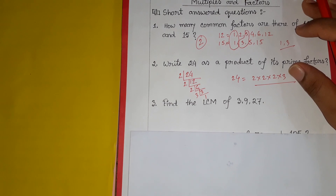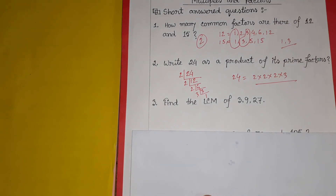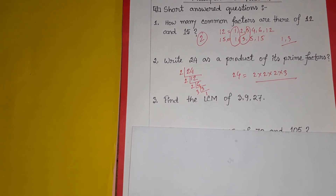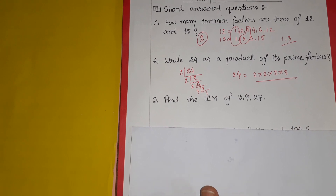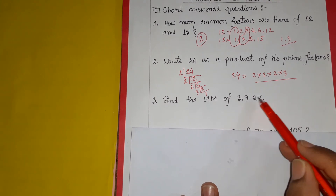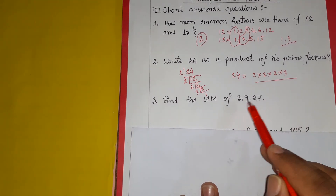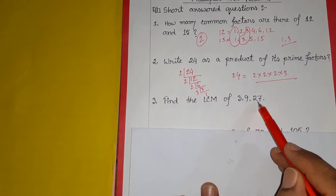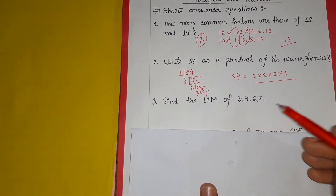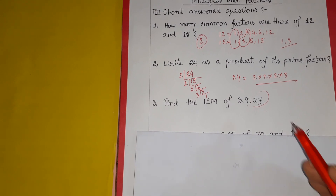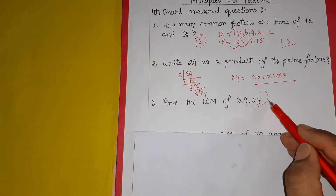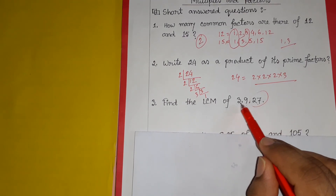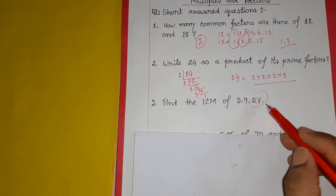Question number 3: find the LCM of 3, 9, and 27. LCM means the least common multiple. The technique here is to note that 3 divides 27 and 9 divides 27. So the LCM is simply 27. The LCM of 3, 9, and 27 is equal to 27.